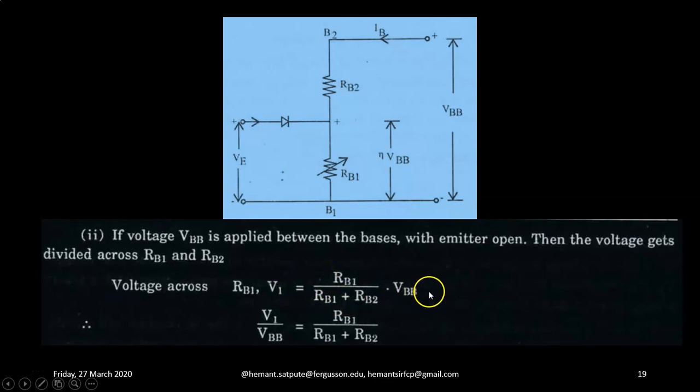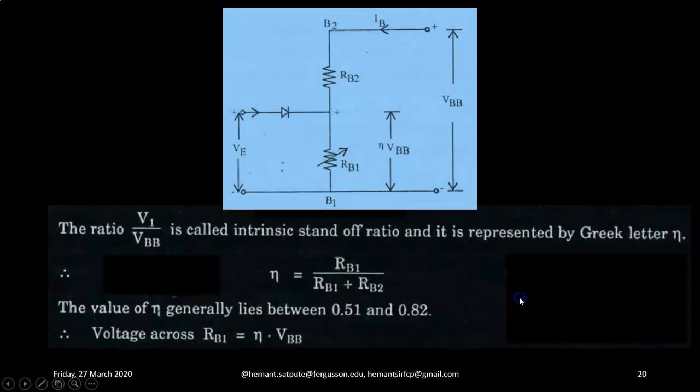Here we are applying potential divider formula. So V1 upon VBB is equal to RB1 upon RB1 plus RB2. Now the ratio V1 upon VBB is called the intrinsic standoff ratio and it is represented by Greek letter eta.